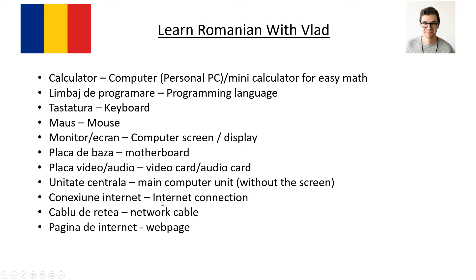For internet connection — 'conexiune internet' — when you have a computer and want to connect to the internet to play games or go online, you need 'o conexiune la internet.' To make that work you use a cable — 'cablu' — specifically a network cable, 'cablu de rețea.' Social networks like Facebook use 'rețea.' A web page is 'pagina de internet,' which is pretty straightforward.